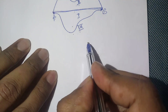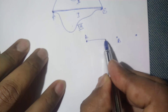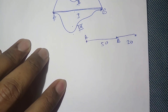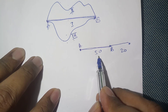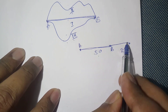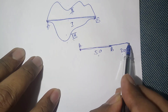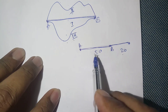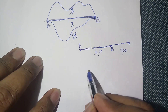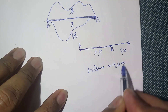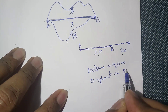If an object starts from A, goes to B (50 meters), then to C (20 meters beyond B), and comes back to B — what is the distance and displacement? The distance is 50 + 20 + 20 = 90 meters. But for displacement, we only consider the initial position A and the final position B. So the displacement is just 50 meters. This shows the difference between distance and displacement.